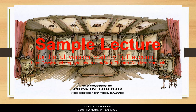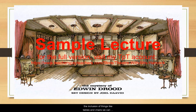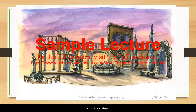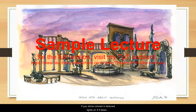Here we have another interior set for The Mystery of Edwin Drood. Note that this rendering does not feature a figure, but with the inclusion of things like tables and chairs, we can guess as to the scale. It is detailed and shows color and texture. This rendering for Shakespeare's Much Ado About Nothing is an exterior set, so we can see the cyclorama upstage. The cyclorama is a large piece of fabric stretched tightly behind the scenery. If you shine colored and textured lights on it, it takes on that color and texture. Here it is being used for a beautiful sunset.